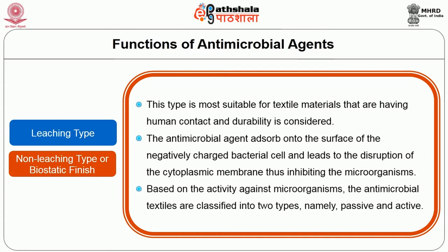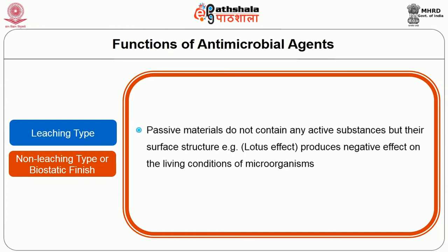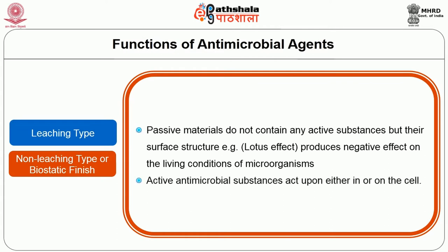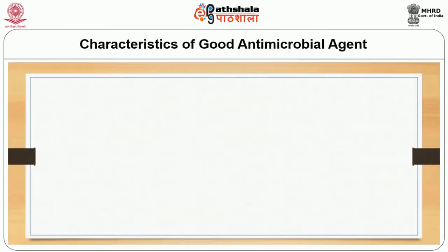Based on activity against microorganisms, antimicrobial textiles are classified into two types: passive and active. Passive materials do not contain any active substances but their surface structure — e.g. the lotus effect — produces a negative effect on the living conditions of microorganisms. Active antimicrobial substances act upon either in or on the cell. Next we will see the characteristics of a good antimicrobial agent.